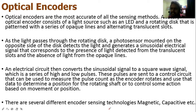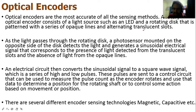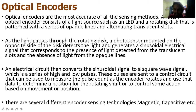Optical encoders are the most accurate of all sensing methods. A rotary optical encoder consists of a light source such as an LED and a rotary disc patterned with a series of opaque lines and alternating translucent slots. As light passes through the rotating disc, a photo sensor mounted on the opposite side detects the light and generates a sinusoidal electrical signal corresponding to the presence of light from the translucent slots and the absence of light from the opaque lines.